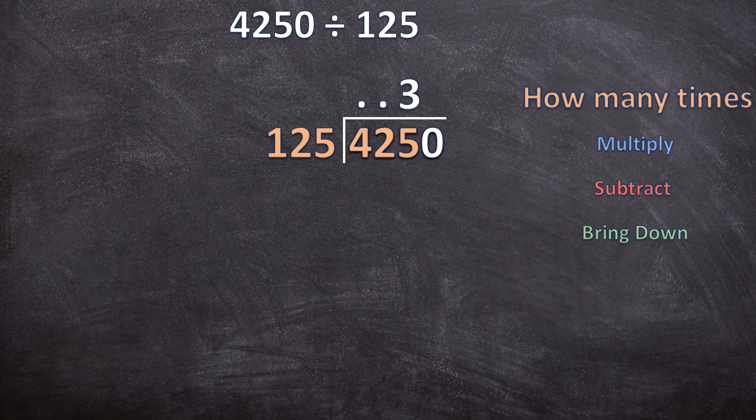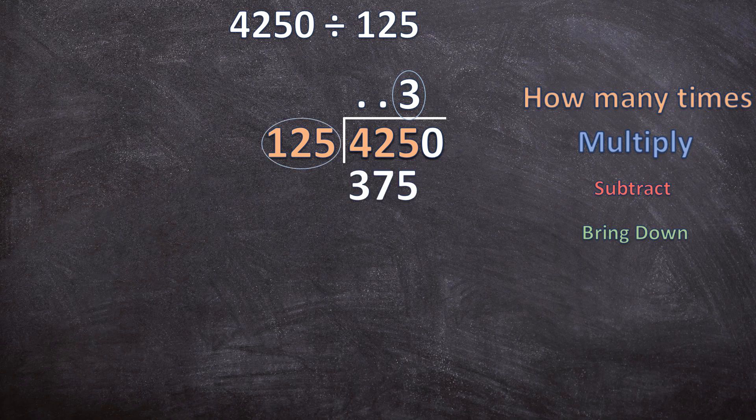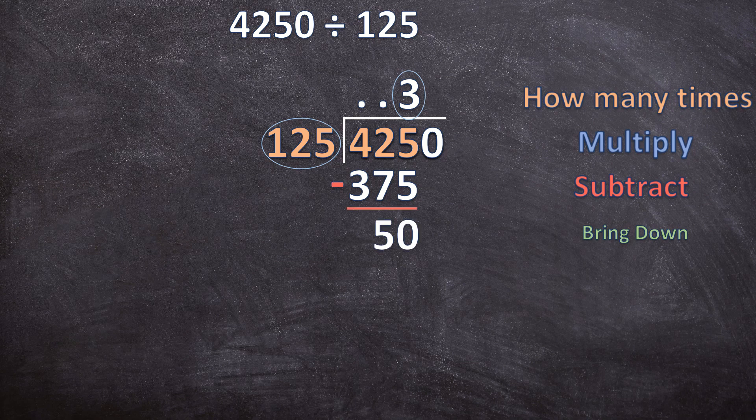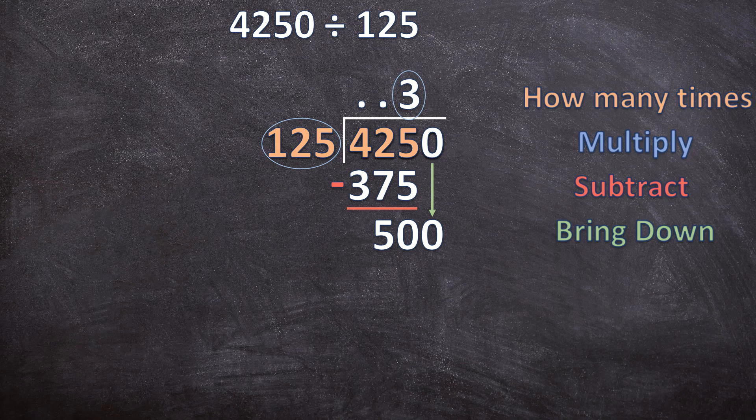And now we move on to the next step: multiply. 3 times 125 is 375. Our next step is subtract. 425 minus 375 is 50. And our last step is bring down. We have that 0 we can bring down, so we bring down the next digit.